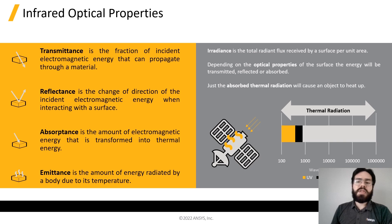Finally, we have Emittance, which is the amount of energy radiated by a body due to its temperature. There are other optical effects such as scattering and internal reflection that are not covered on this presentation, but are taken into account by our absorbers.